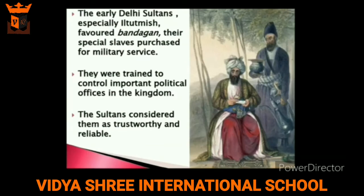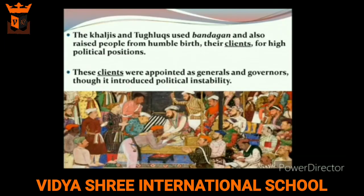Let's have a closer look at administration and consolidation under the Khiljis and Tughlaqs. To keep the vast Delhi Sultanate intact and united, it was essential that governors and administrators were reliable. In the early Delhi Sultanate, especially Iltutmish, appointed special slaves purchased for military service, called Bandagan in Persian. They were carefully trained to hold some of the most important political offices in the kingdom. Since they were totally dependent upon their masters, the Sultan could trust and rely upon them completely.